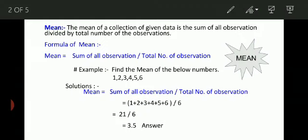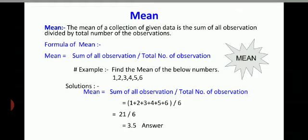Now we have to add these numbers. We get 21. 21 upon 6. We get 3.5. This is the mean.